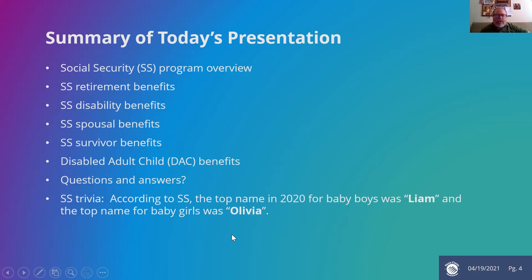Some trivia I found on the social security website: according to social security, in 2020, the top name for baby boys was Liam and the top name for baby girls was Olivia. If you look back on the social security website, you can see the different most popular baby names going year after year. These almost seem like old-fashioned names to me — Liam and Olivia. The only Liam I know is Liam Neeson, the action star in Hollywood, but my goddaughter has a few Olivia's in her high school class.